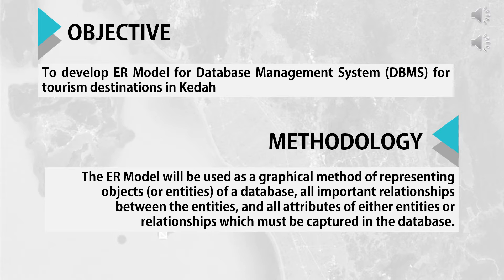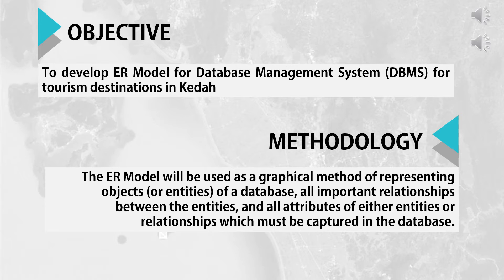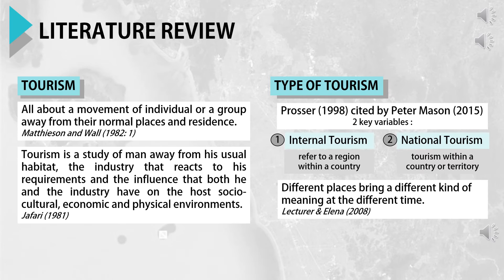The aim of this paper is to develop an ER model for database management system for tourism destinations in Kedah. The ER model will be used as a graphical method of representing objects or entities of a database, all important relationships between the entities, and all attributes of either entities or relationships which must be captured in the database. It also involves several stages that will be explained later.